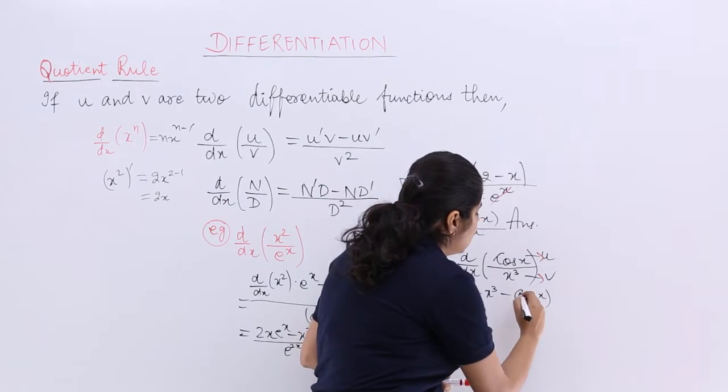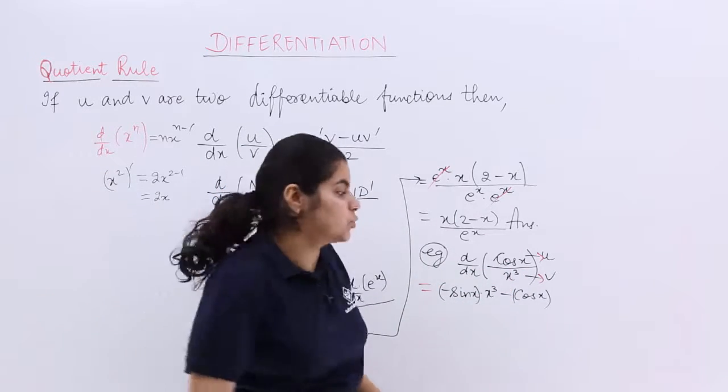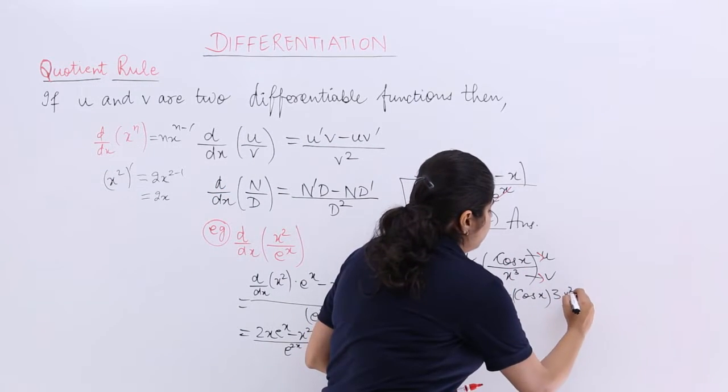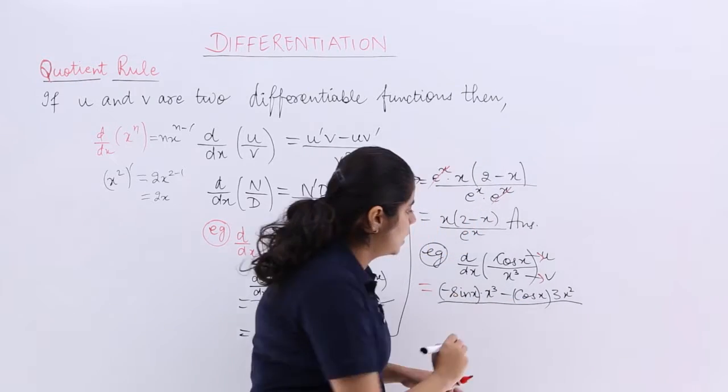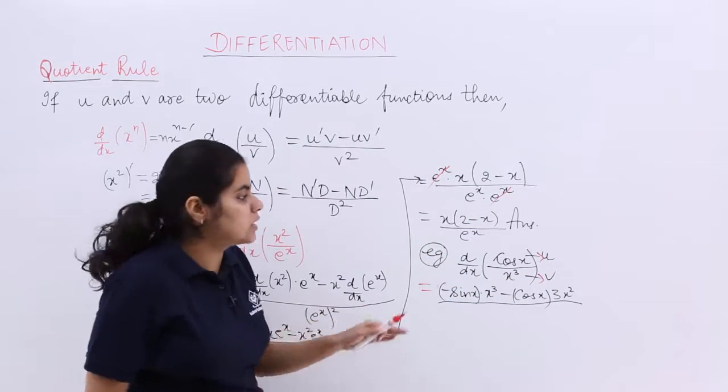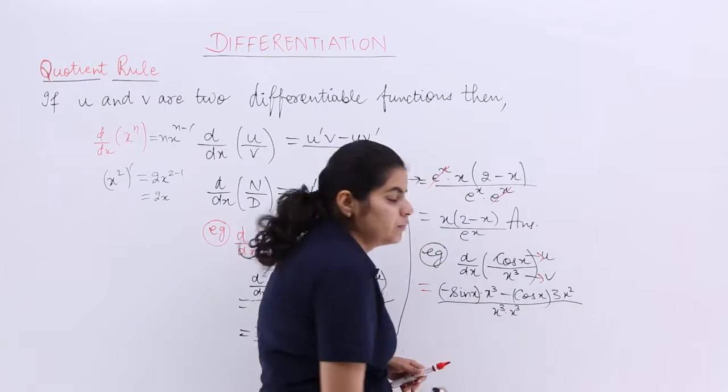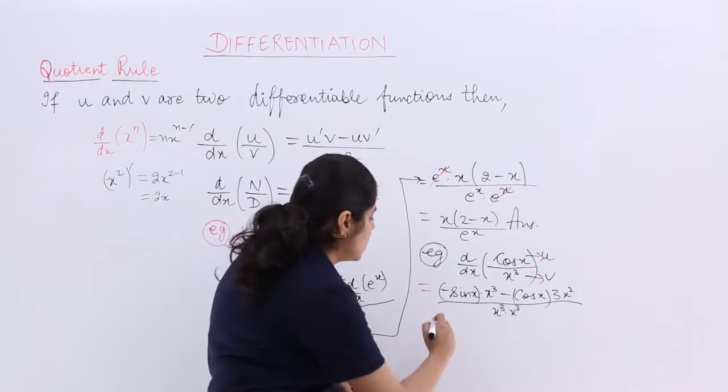U is cos x. v dash is differentiation of x cube by the similar formula, same formula. So it has to be 3x square upon v square. U dash v minus u v dash upon v square. v square is x cube square. So it is x cube multiplied by x cube. So it has to be x raised to the power 6.